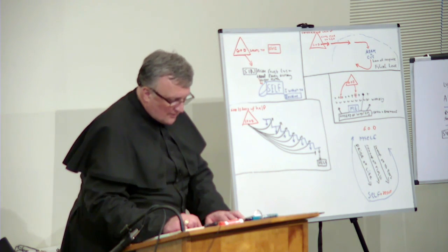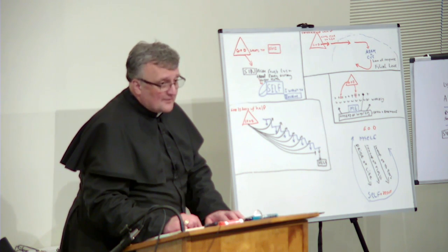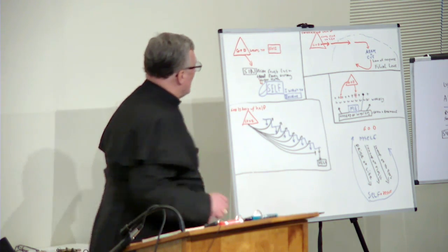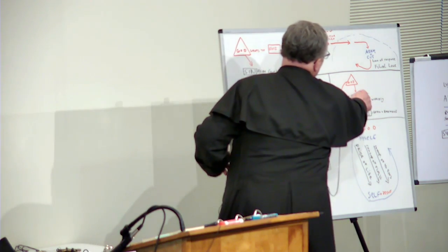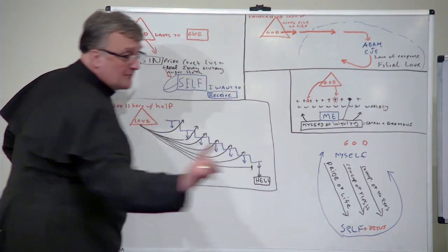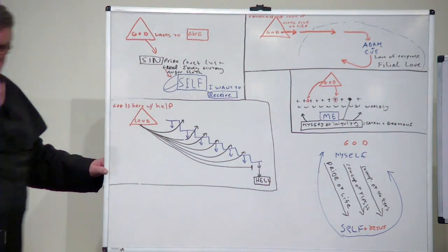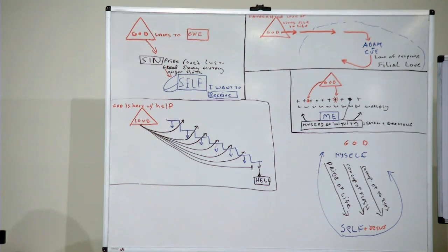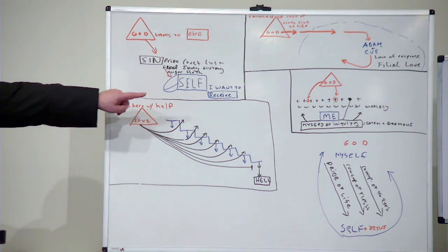The second thing God does is he makes the thought that we already have clearer and the impulse stronger. This is of a thought I already have. And that's called an understanding. We've got the thought already, a good thought that we've put there. But God gives an understanding. He illuminates that thought. That is called an understanding. The first one is called a light.